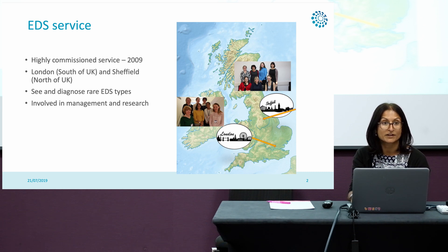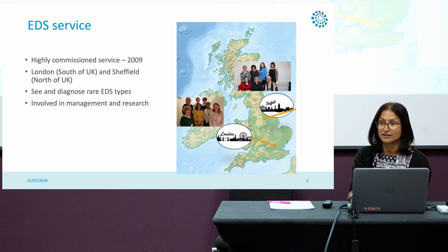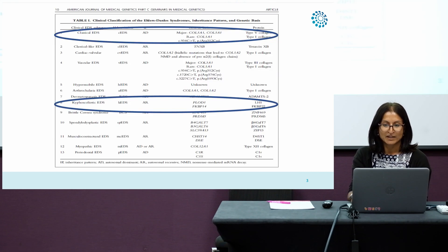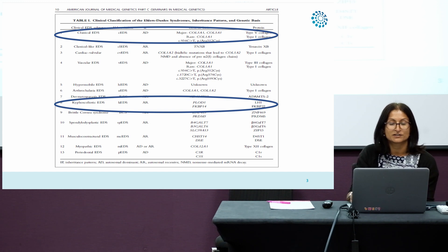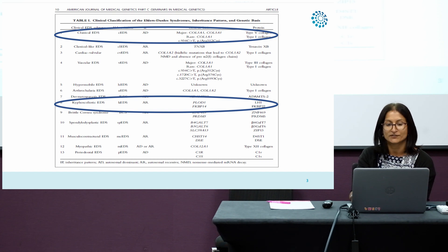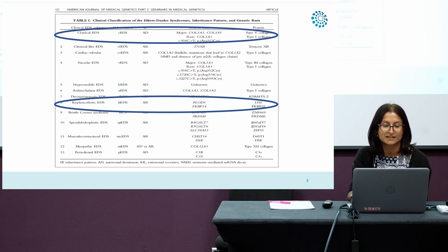Our role is to see and diagnose rare EDS types, and we're also involved more and more with the management of these conditions and in research. Here you can see our group of genetic counsellors and consultants and our administrative teams. I think we're all familiar with the 2017 nosology paper which shows the 13 different types of EDS and the 19 different genes that are associated.